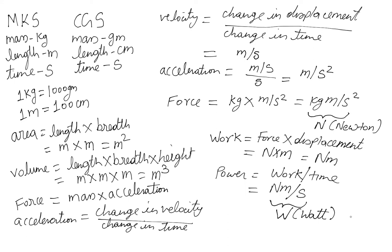So we have seen that there are basically two unit systems: MKS and CGS. We know how they are related using conversion factors. We also learned that using simple formulas we can derive units for complex physical quantities. Let's derive a few more.